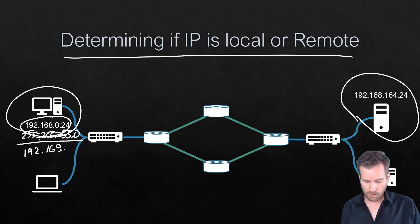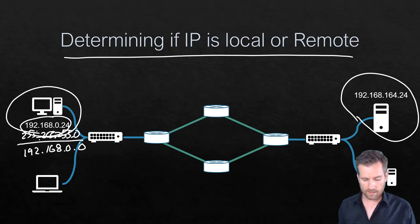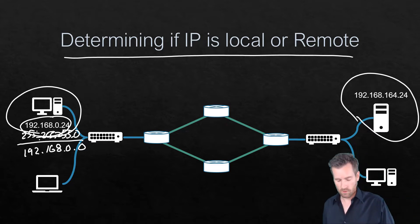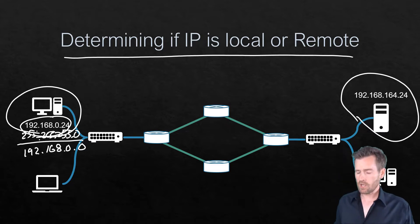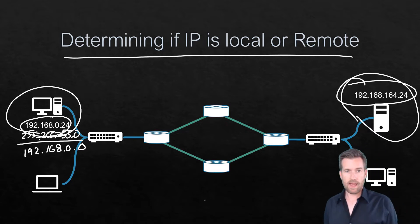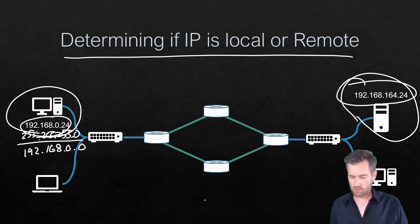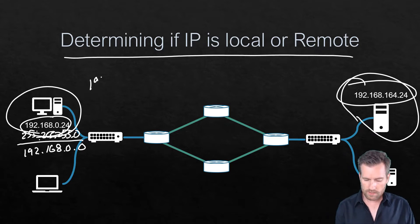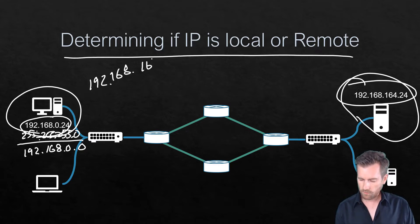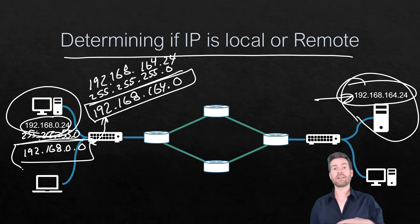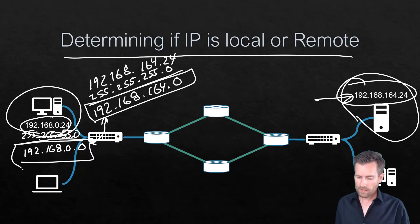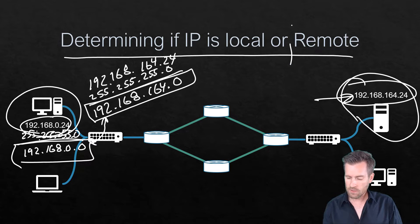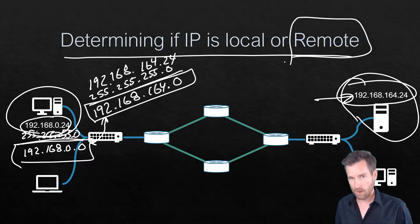It will do a process called anding to determine what network it's part of — in this case, 192.168.0.0. It also knows the destination IP address, probably obtained through DNS: 192.168.164.24. These are on two different networks, so it's determined that the destination machine is on a remote network.